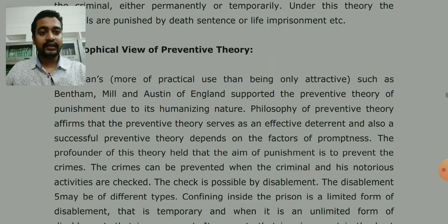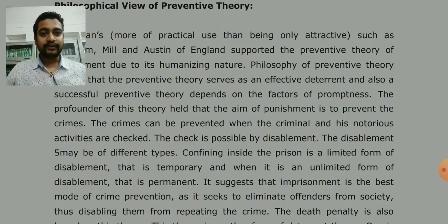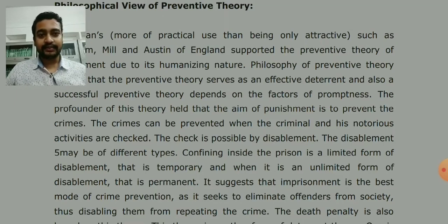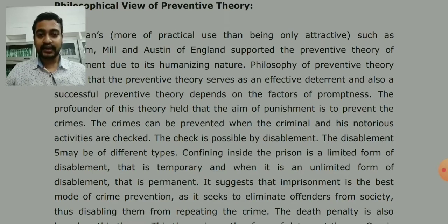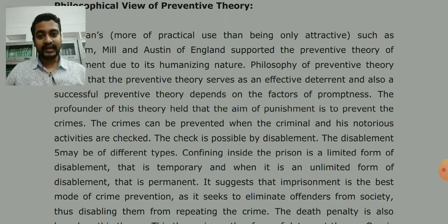The profounder of this theory held that the aim of punishment is to prevent the crime. The crime can be prevented when the criminal and his notorious activities are checked. A criminal's activities can only be checked when the criminal is in our grip — in our hands — and we can keep proper daily observation on them. That is only possible when we keep them in a jail or somewhere controlled.